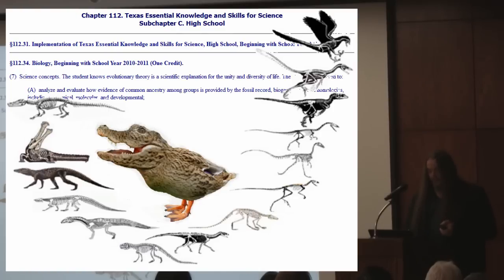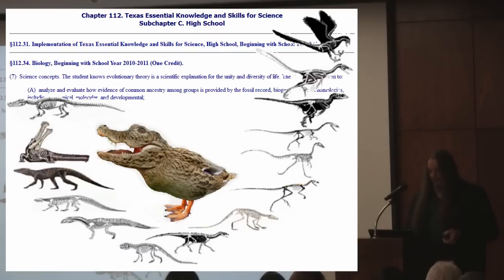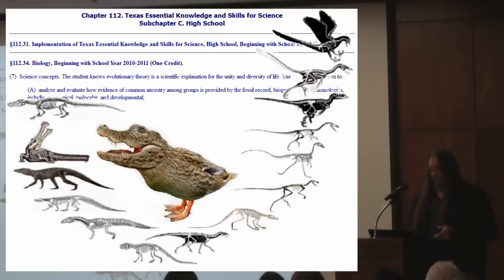We don't just have some inexplicable implied procession — we have the mechanism that makes it work. We know it works, we know how it works, and we've seen it at work, not just at the micro-evolutionary level within species, but with emerging species at the macro-evolutionary level, observed dozens of times under controlled conditions both in the lab and in the field.